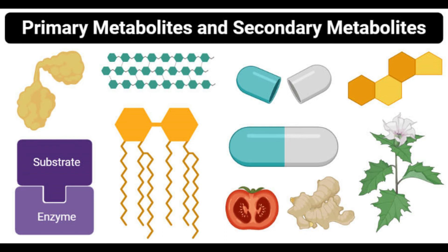Pigments are compounds of various colors produced by various organisms for various purposes. These are secondary metabolites produced by organisms like plants and bacteria. Plant pigments like chlorophyll are essential for processes like photosynthesis, whereas bacterial pigments can be extracted for use in industries as dyes. Pigments are mostly non-toxic and might even have medicinal importance, used as antioxidants and additives.